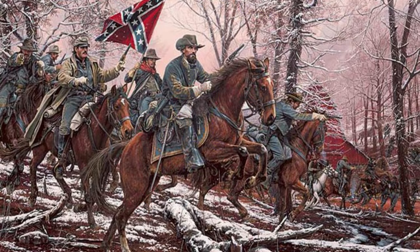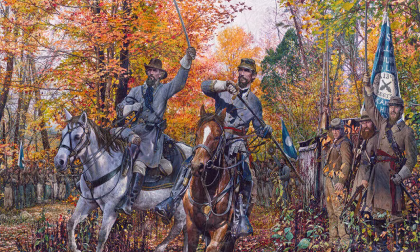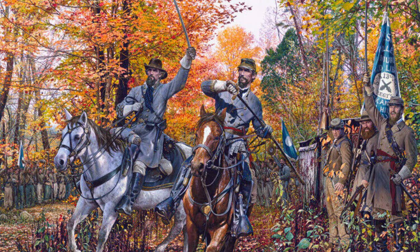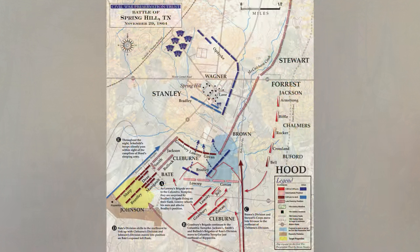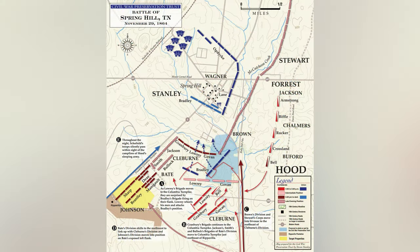As the morning of November 29th dawned, Confederate cavalry under General Nathan B. Forrest spearheaded the advance, swiftly crossing the Duck River. In a pivotal moment, Forrest's cavalry outmaneuvered Union horsemen under General James H. Wilson, allowing the Confederates to press forward.